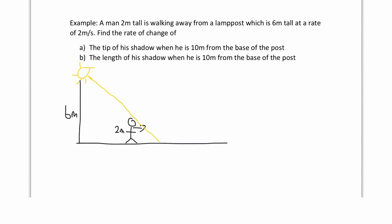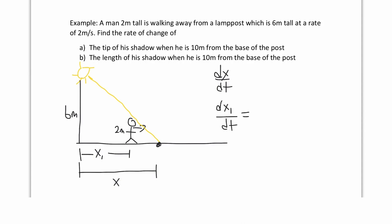The tip of his shadow is the point where that light ray hits the ground. We call the total distance from the lamppost to the shadow tip x, so we're looking for dx/dt. He's walking at 2 m/s, which means the distance from him to the lamppost — call it x₁ — is increasing at dx₁/dt = 2 m/s. The shadow length itself we'll call x₂.